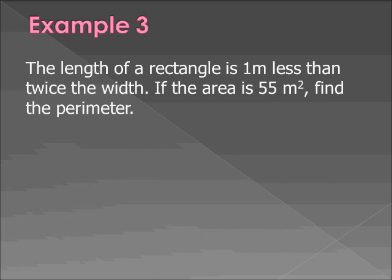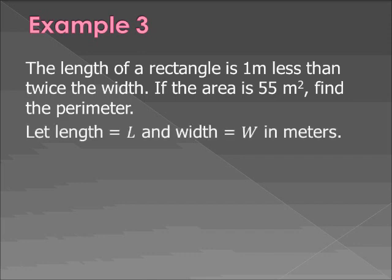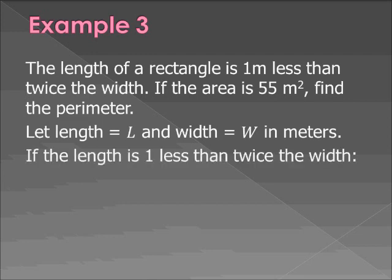Example 3, the length of a rectangle is 1 meter less than twice the width. If the area is 55 square meters, find the perimeter. All right. So this is about the point where I would encourage you to try to solve some of these problems on your own, and then check to see if the answer you received or you got is correct by pausing the video and restarting when you're ready. So let's start by figuring out the relationship. Let's call the length L and the width W in meters. Now we know that if the length is one less than twice the width, let's start with the twice the width part. Twice the width, that's going to be 2 times W. One less than twice the width is going to be 2W minus 1. So length is 2W minus 1.